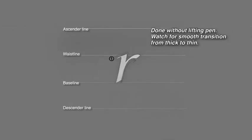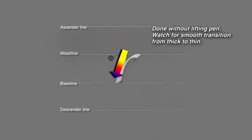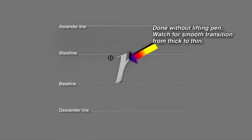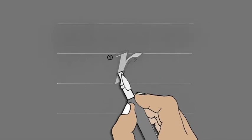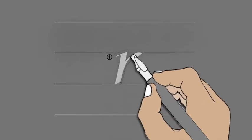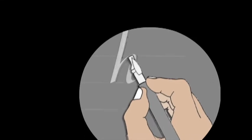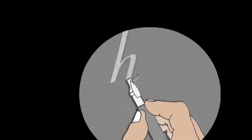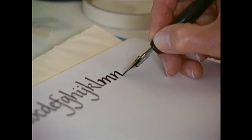Now, let's go from the longest letter to one of the shortest letters. The R is done without lifting the pen. Start at the waistline. Watch for the smooth transition from thick to thin. Once you reach the baseline, begin the stroke up, then branch out to the right for the last part of the letter, finishing with approximately the same angle you started with. You may have noticed as you manipulate your pen, the angle varies slightly from the 45 degree angle. This pen angle variation becomes more noticeable as the pen moves into the curves and flourishes.